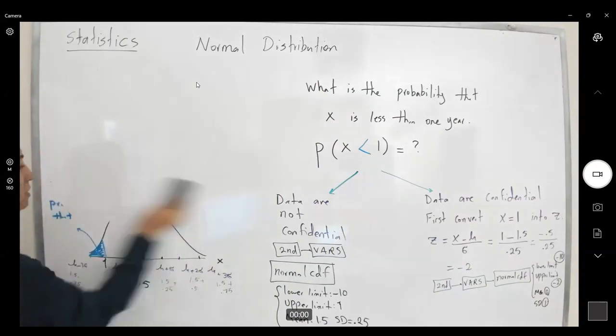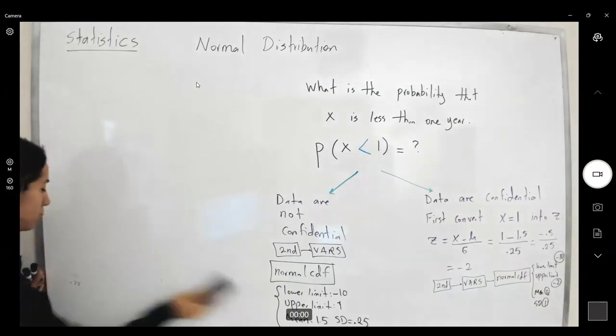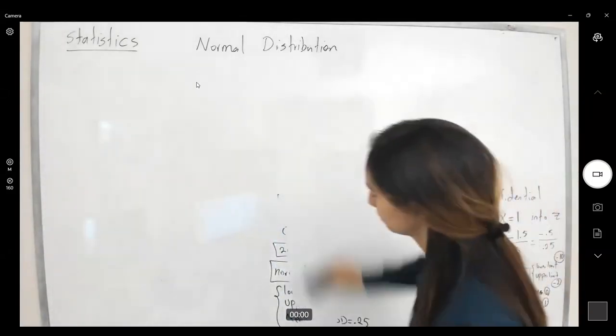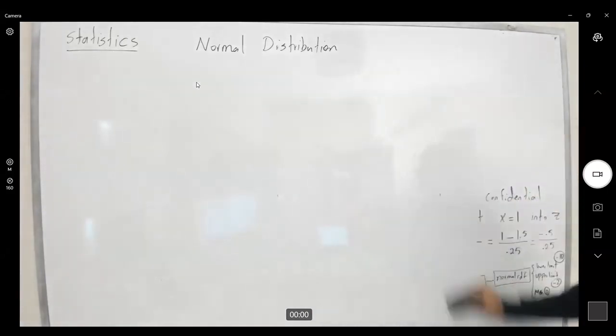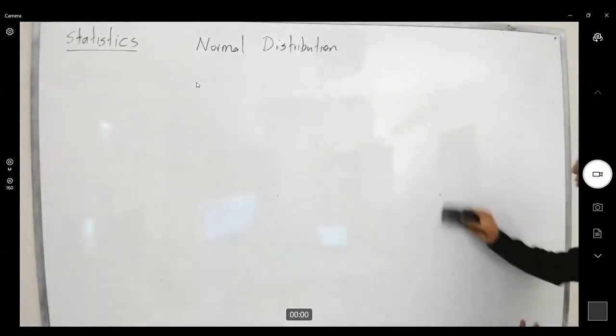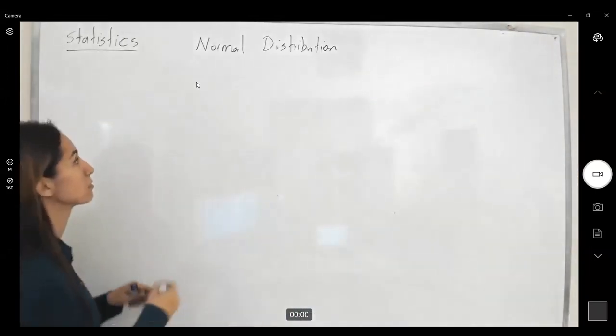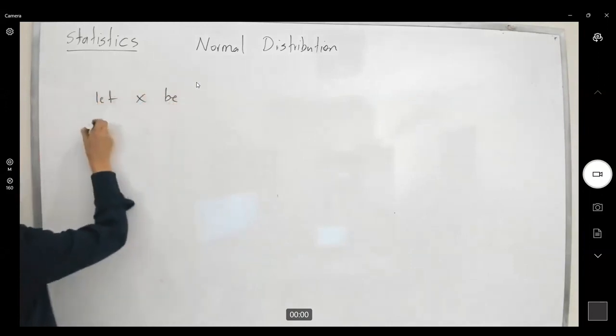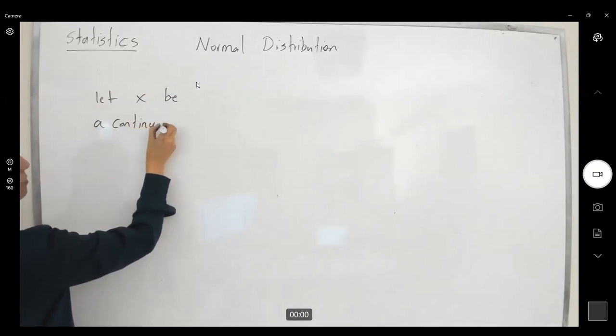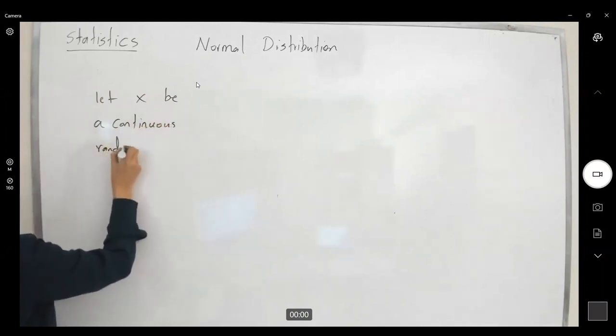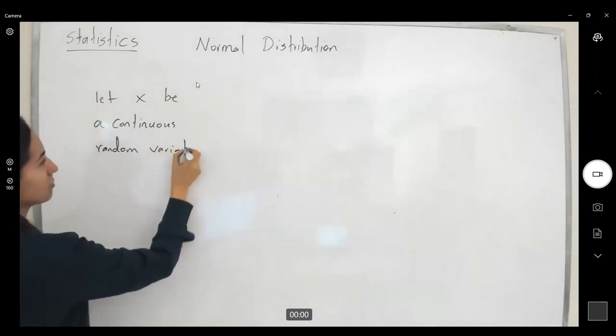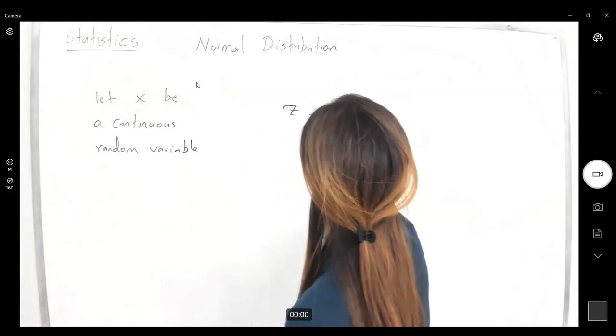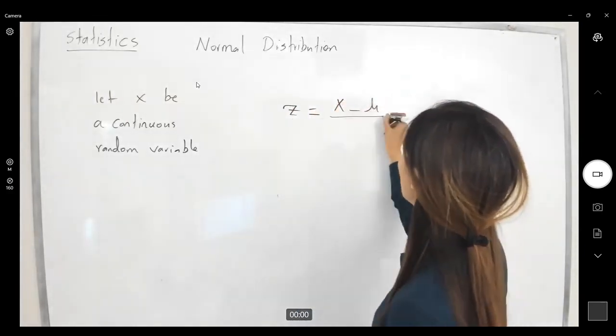So remember that we said suppose x represents a continuous random variable, and suppose you want to convert them into a confidential data type, z-value, z-score. We can use z, which is defined as x minus mu divided by sigma.